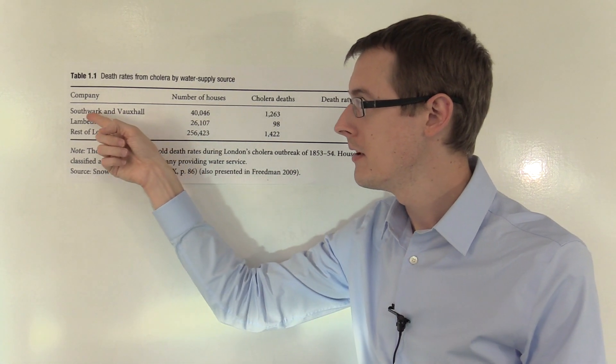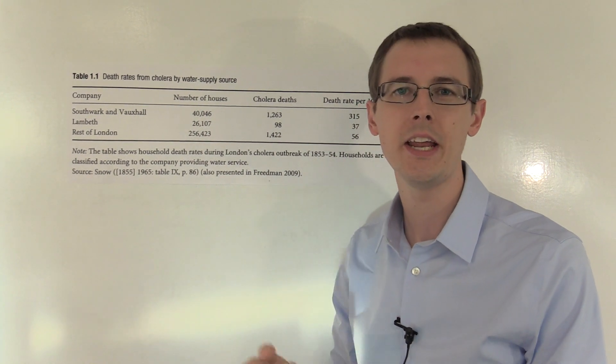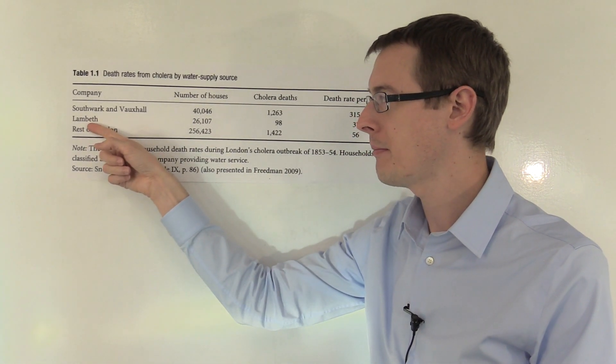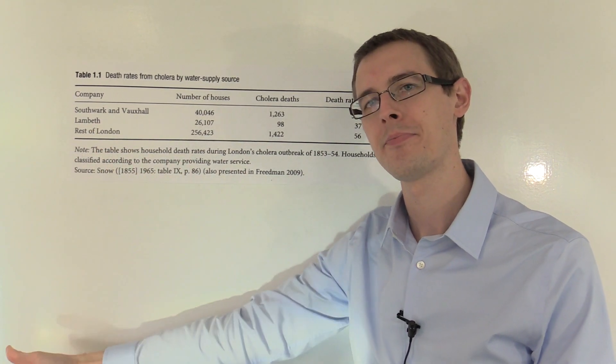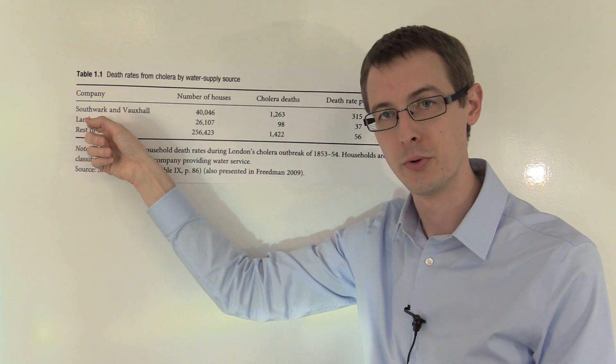Southwark and Vauxhall, their intake pipe was in the middle of the city, so it was taking in sewage, nasty, infested water, whereas the Lambeth Company, because they moved their pipe, they were getting clean water that wasn't ridden and filled with sewage.